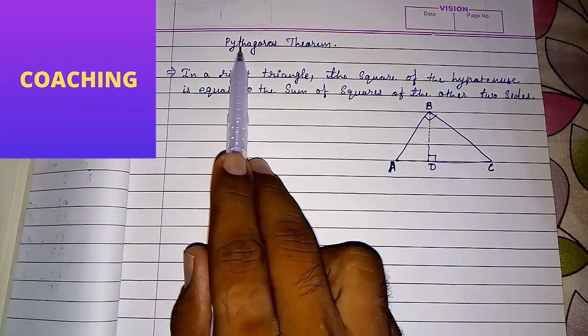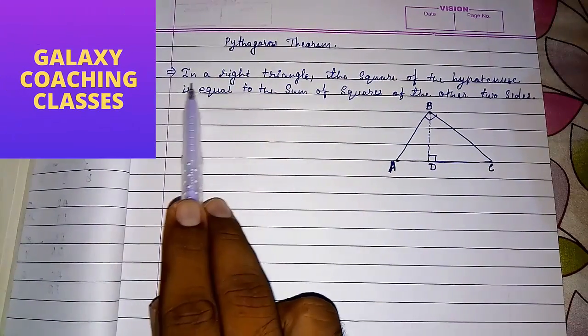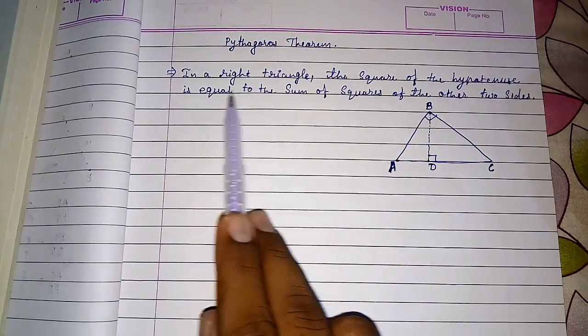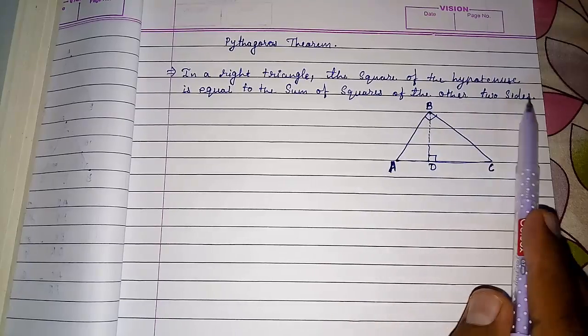Hello friends, today we are going to study about Pythagoras theorem. In a right triangle, the square of the hypotenuse is equal to the sum of squares of the other two sides.